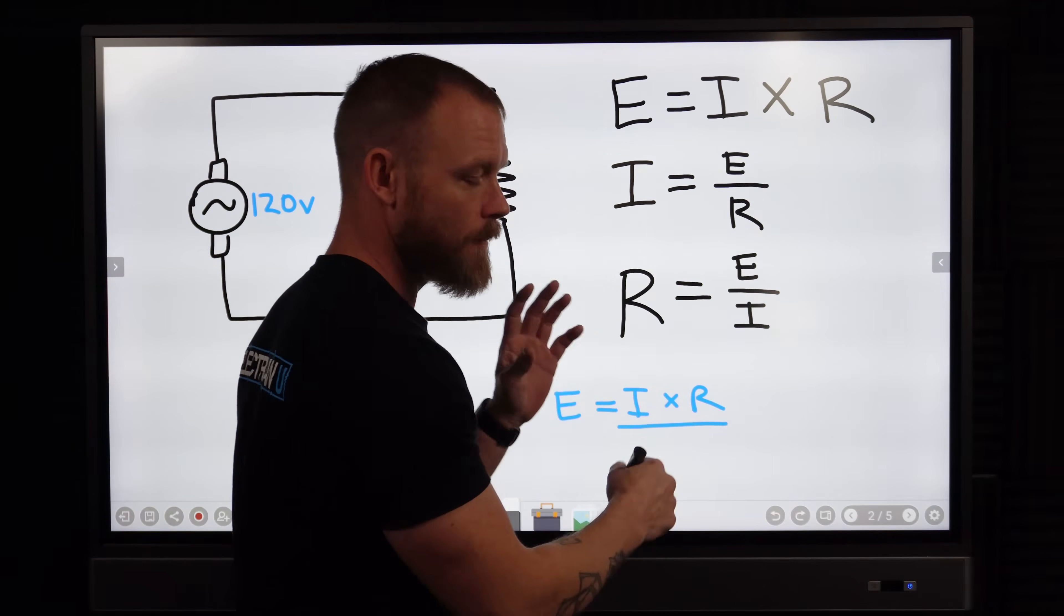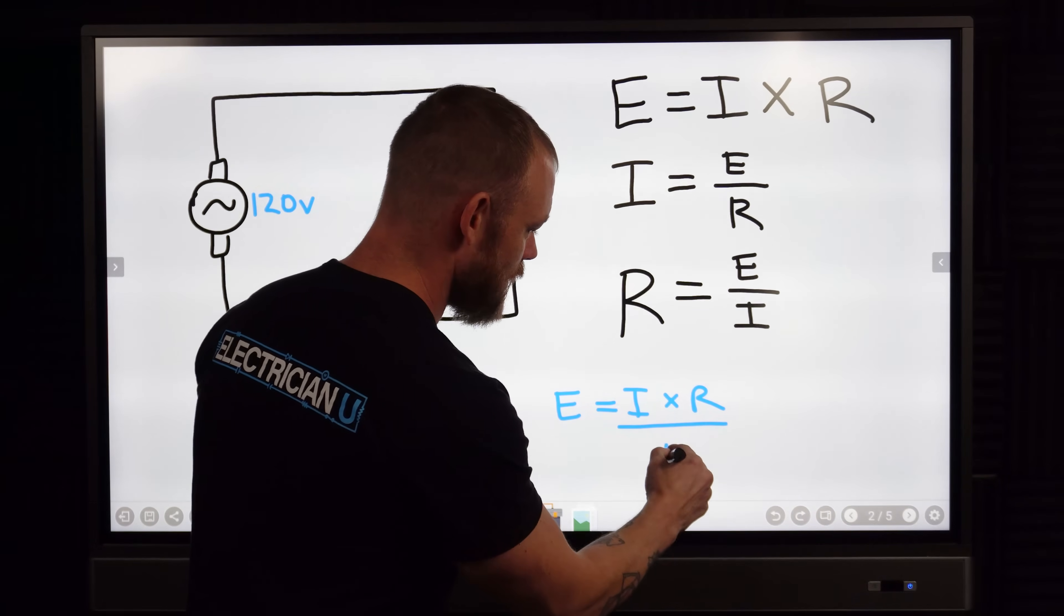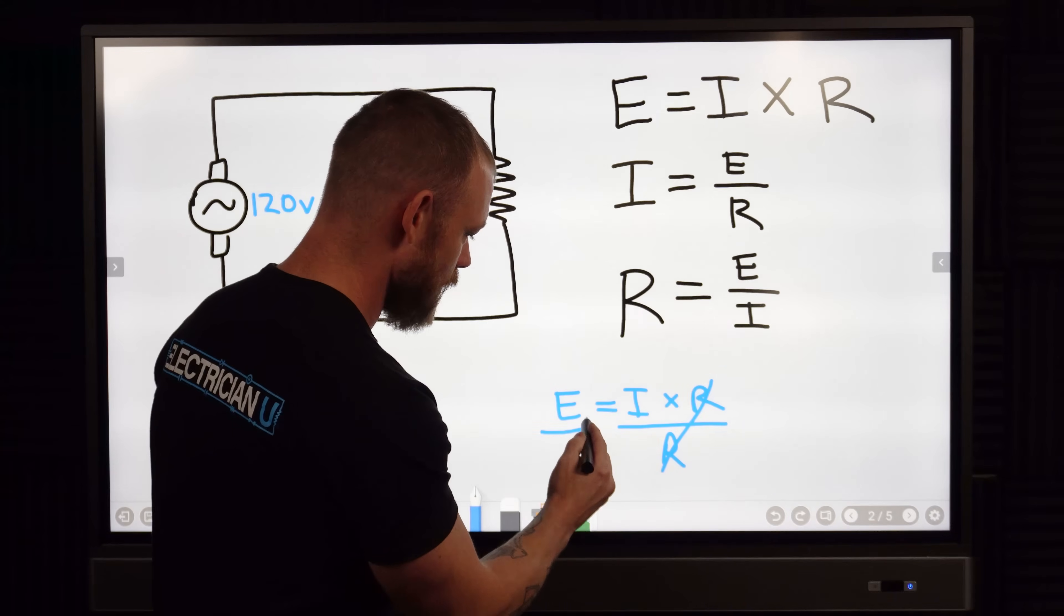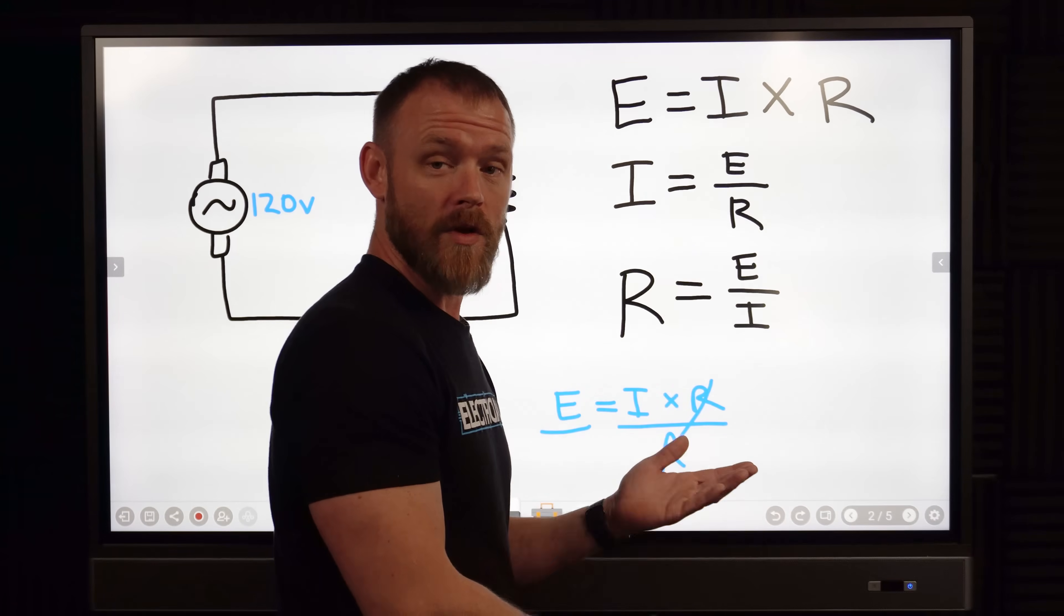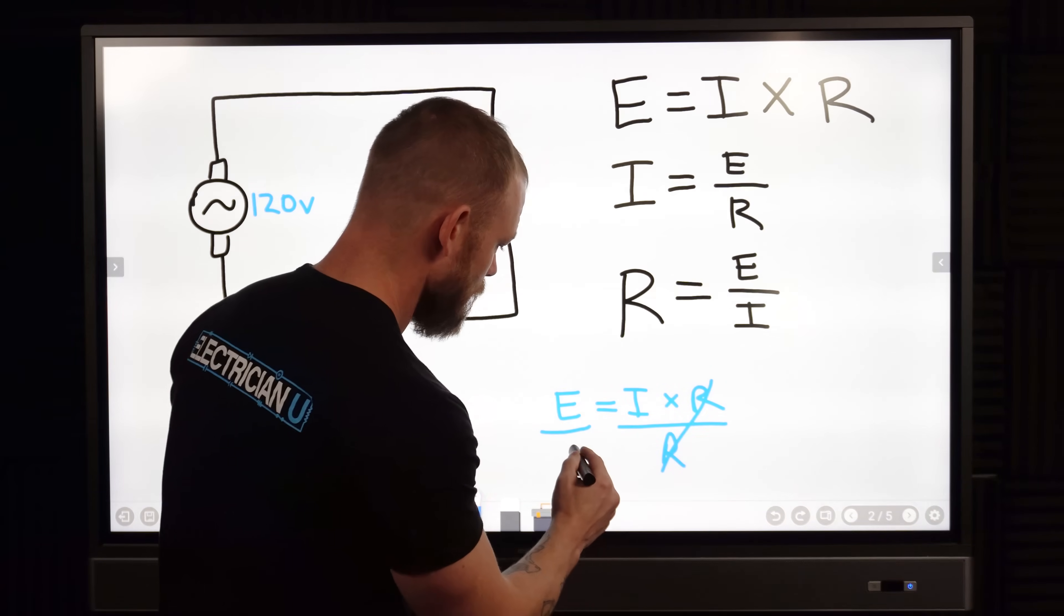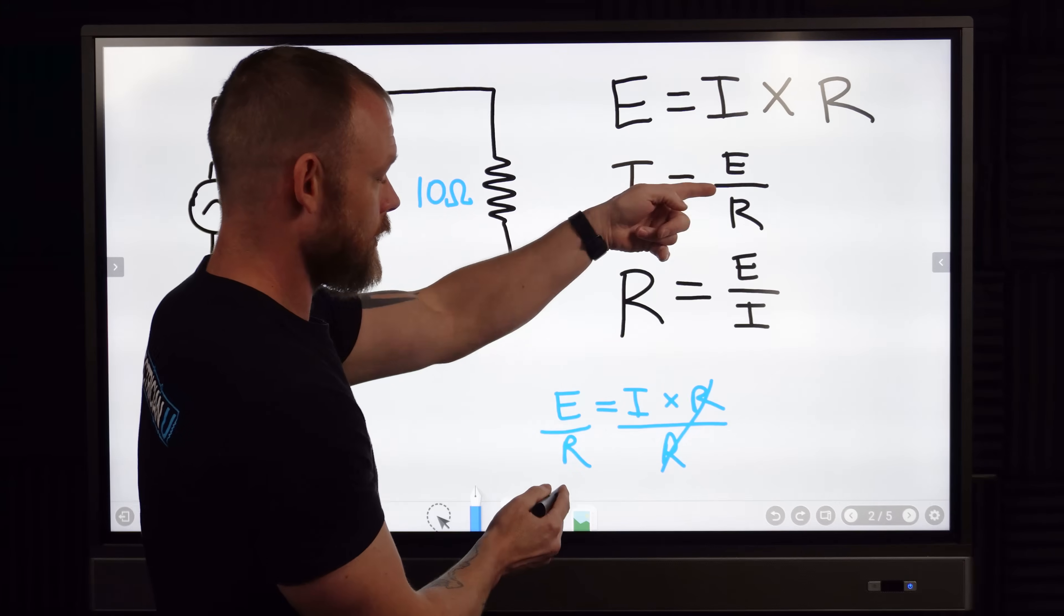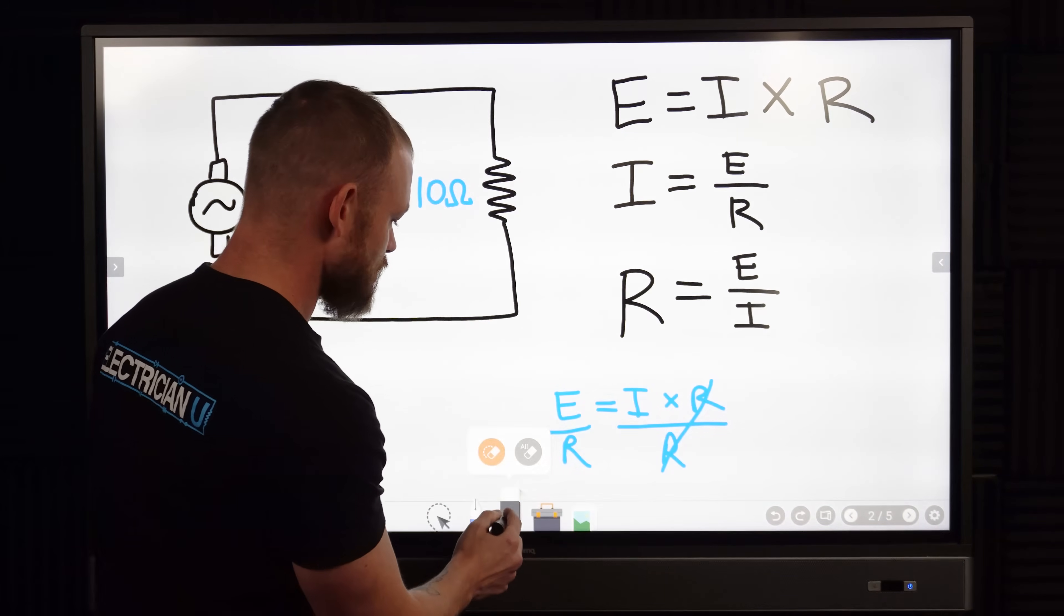But if we don't have the values and we need to solve for amperage instead, all you do is divide by whichever value that you're not trying to find. So if we're trying to find I, we would divide by R to get rid of those R's and leave I isolated by itself. But in the equation you have to balance the equation, so you always have to have whatever you do on the left you got to do on the right. So we would go E over R, so that leaves us with I equals E over R.